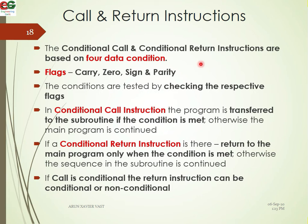In a conditional call, the execution is transferred to the subroutine if the condition is met. If the condition is true, the subroutine runs; otherwise, the main program continues.